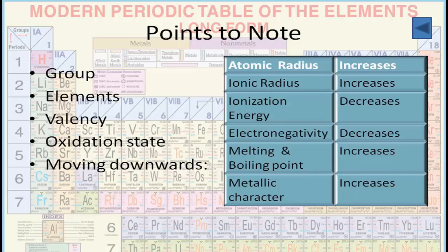And the electronegativity similarly goes on decreasing, which actually means the atom's ability of attracting the electrons decreases down the group. The melting point and boiling point go on increasing.